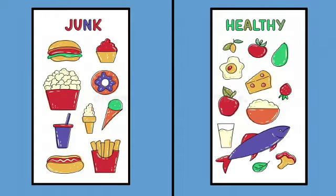I have made two separate charts for you so you can see clearly what is healthy food and what is junk food. In healthy food you can see fruits, vegetables, cheese, fish, milk, and eggs. In junk food there are burgers, ice creams, popcorns, donuts, french fries, and cold drinks. These are junk foods.